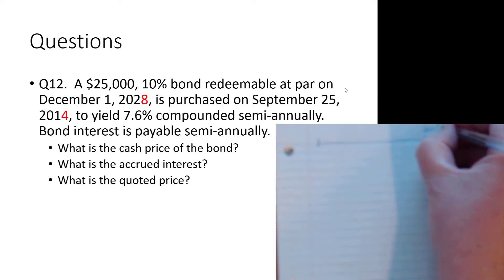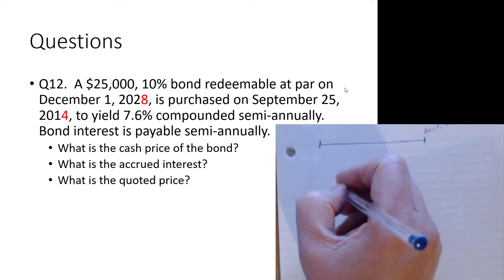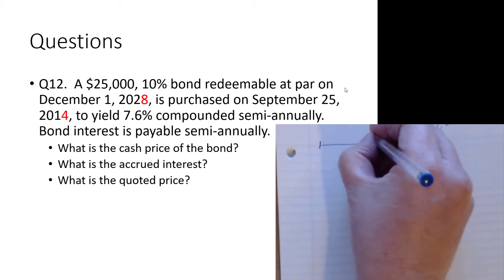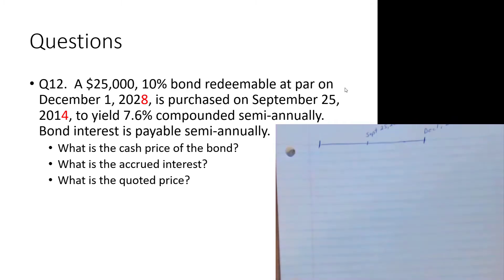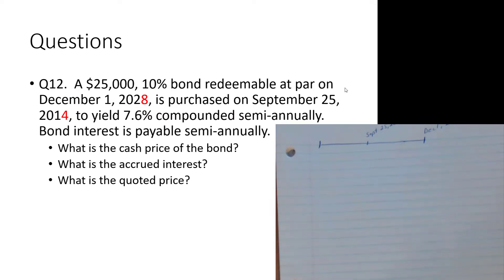First, the bond is redeemable on December 1st, 2028 — let's get that on the timeline. Second, it's purchased on September 25th, 2014 — let's get that on the timeline as well. Step one in this process is finding the purchase price of the bond as of the most recent coupon payment date. We need to figure out when those coupon payments happen. On December 1st, 2028, two things happen: we get a coupon payment and we get the face value of the bond.